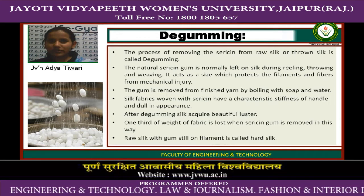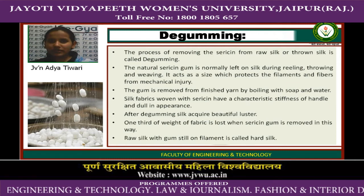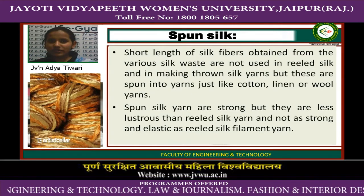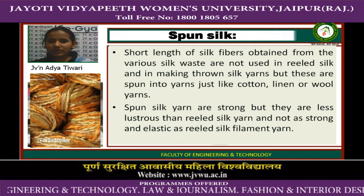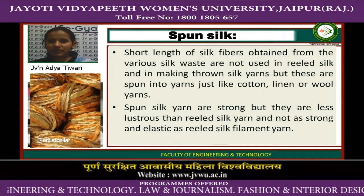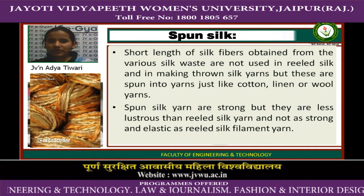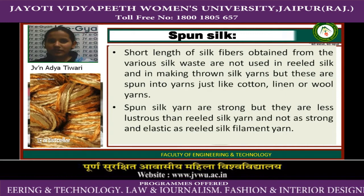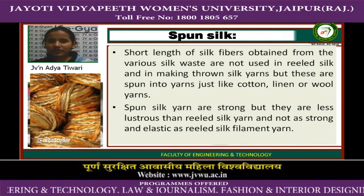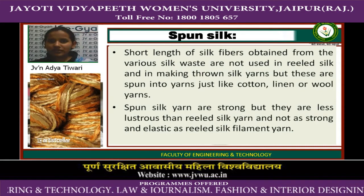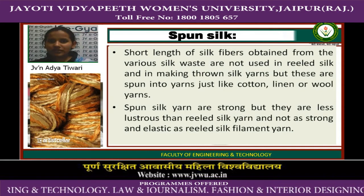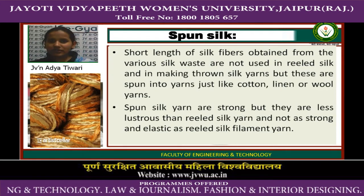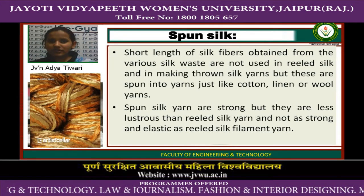Raw silk with gum still on the filament is called hard silk. Spun silk consists of short lengths of silk fibers obtained from various silk waste that are not used in reeled silk or in making thrown silk yarn, but these are spun into yarns like cotton, linen, and wool yarns. Spun silk yarns are strong but they are less lustrous than reeled silk yarns.